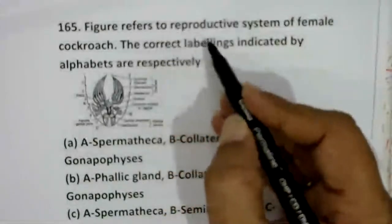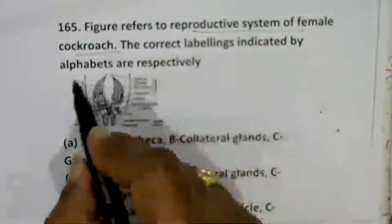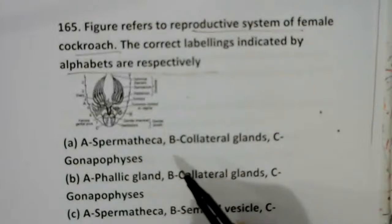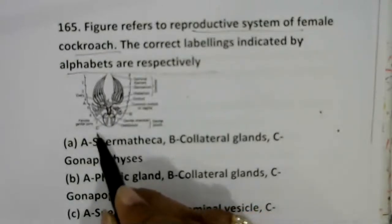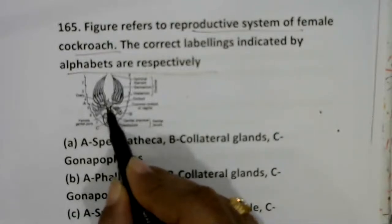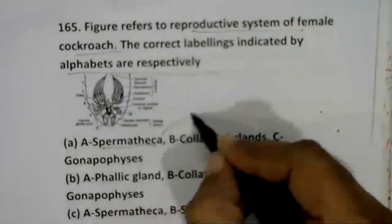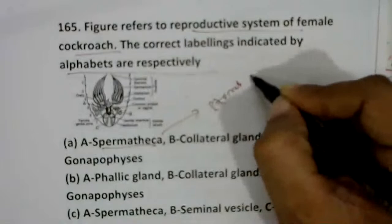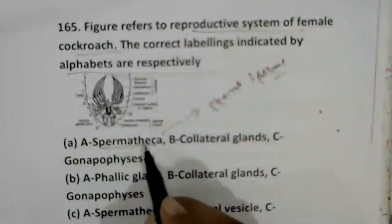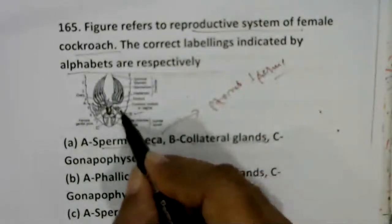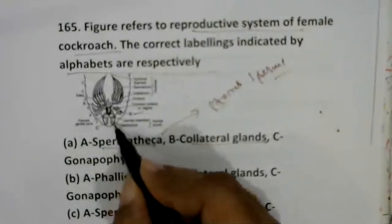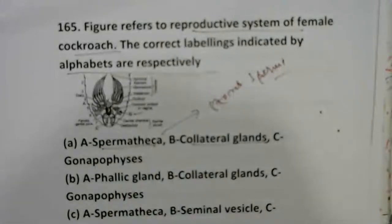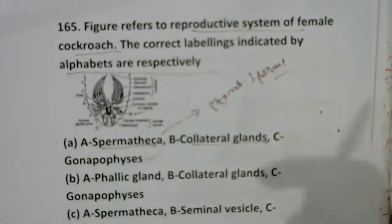The figure refers to the reproductive system of a female cockroach. Label A is the spermatheca, which stores sperm cells. Label B is the collateral gland, present in female individuals. Label C is the gonapophysis — three flap-like gonapophysis are present in the anal region. Option A is correct.